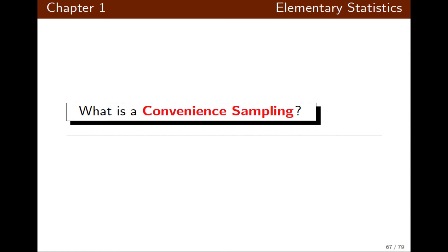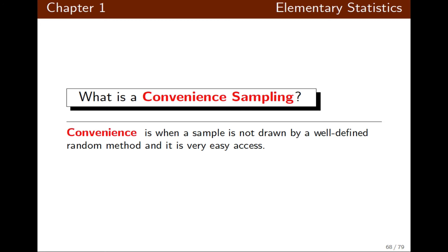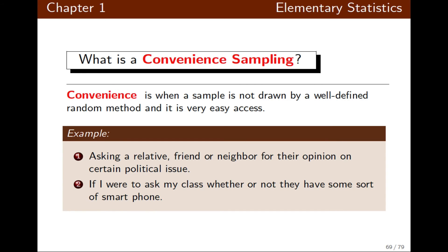Convenience sampling is a sample drawn with no well-defined method in the process — the easiest access is used. For example, asking a neighbor what they think about a certain news issue, or asking classmates sitting next to you whether they have a smartphone, a calculator, or if they are a fan of a certain team — those are convenience sampling.